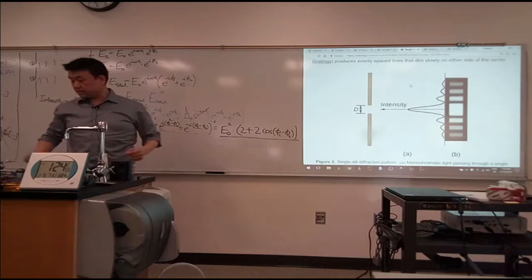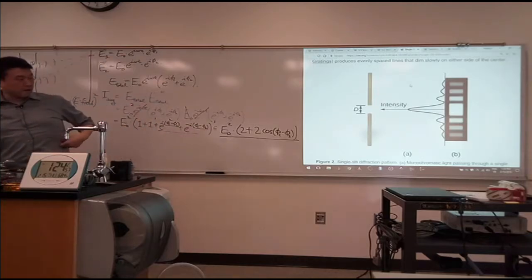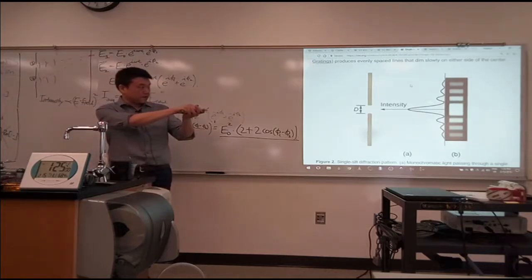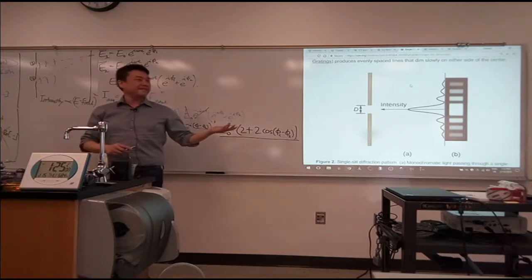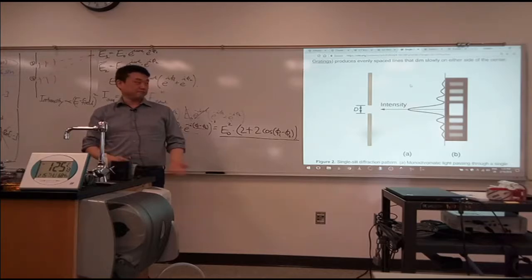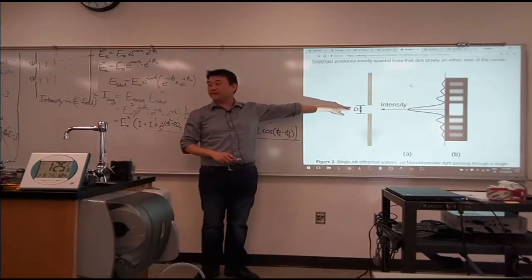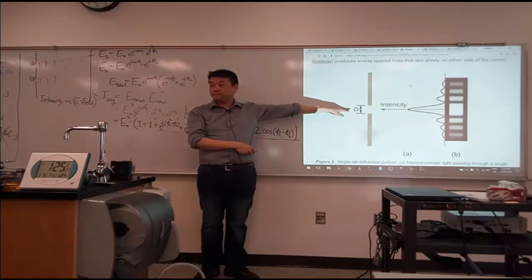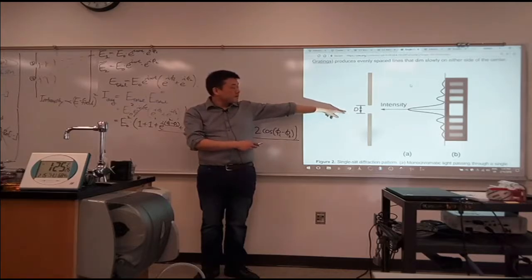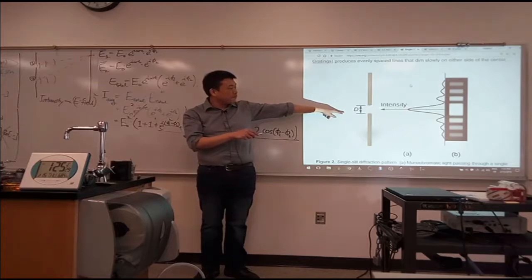When light goes through a single slit, you get a feature - this destructive interference here - that you would only say is from a result of interference. So what's interfering with what if you have only a single slit? You have one slit, there's no other slit that it's interfering with. So where is this destructive interference coming from?